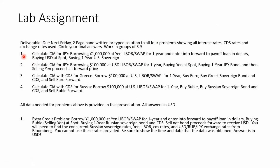Problem one: calculate the covered interest arbitrage from borrowing 1 million yen at the yen LIBOR rate for one year and entering into a forward contract to pay off the loan in dollars. Then buy the dollars with the yen you just borrowed — since that purchase happens today, use the spot price. Then buy a one-year sovereign bond, which will give you U.S. dollar proceeds.